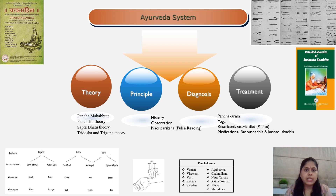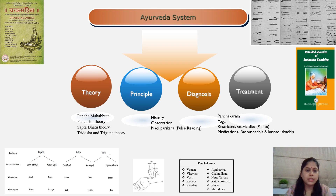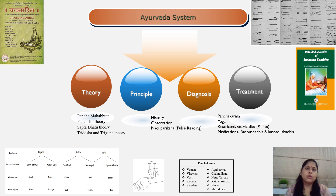The theory of Ayurveda revolves around Panchamahabhuta, Panchashila, Saptadhatu, Tridosha, and Triguna. The Panchamahabhuta — that is Prithvi, Jala, Tej, Vayu, and Akash — relates to the five senses and five organs. An imbalance in Panchashila, Saptadhatu, Tridosha, or Panchamahabhuta leads the human body to various disease conditions.